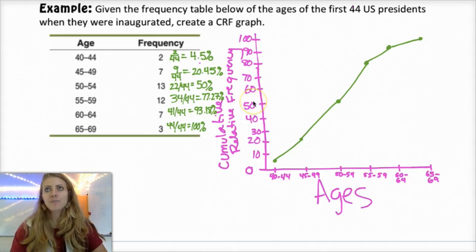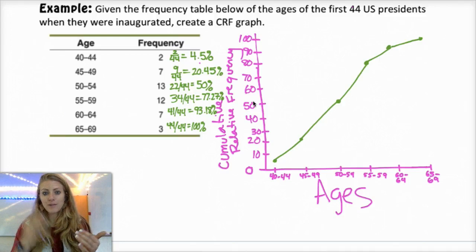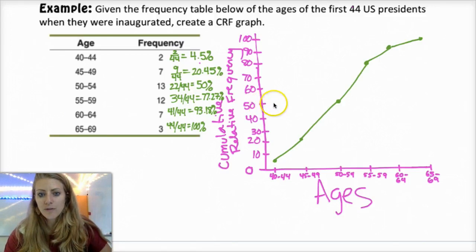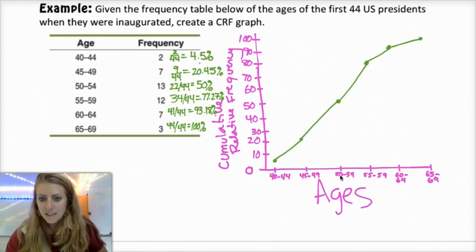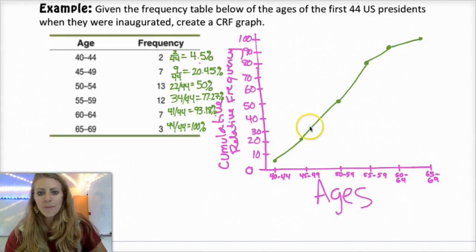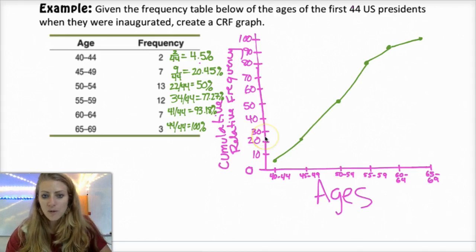The other nice thing about the Ogives is that you can actually figure out the median and Q1 and Q3 really easily. Because the median has 50% of the data below and 50% above. So you would just go over to 50% of the data, look over, and then say, oh, 50%. So the median is between 50 and 54.